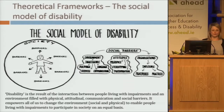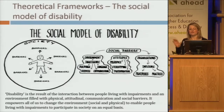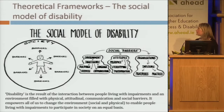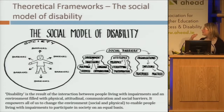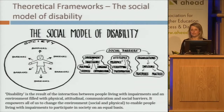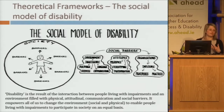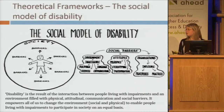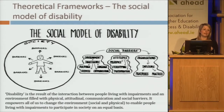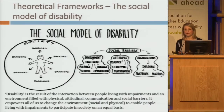The social model of disability — disability service provision has in the past been addressed by the medical model, where students contact the office, submit documentation, get assessed, and then accommodations are put in place. The medical model really focuses on the individual as the problem. The social model, by contrast, views the disabling situation as coming from the interaction between an individual with an impairment and society. The individual has a functional limitation or an impairment, but the disabling situation is created by an environment that is inaccessible.